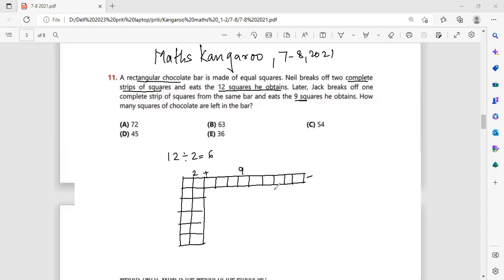So how many squares of chocolate are left in the bar? So if you see that, what will be the dimensions of the rectangle? It is actually 11 times 6, which is 66 squares in total.